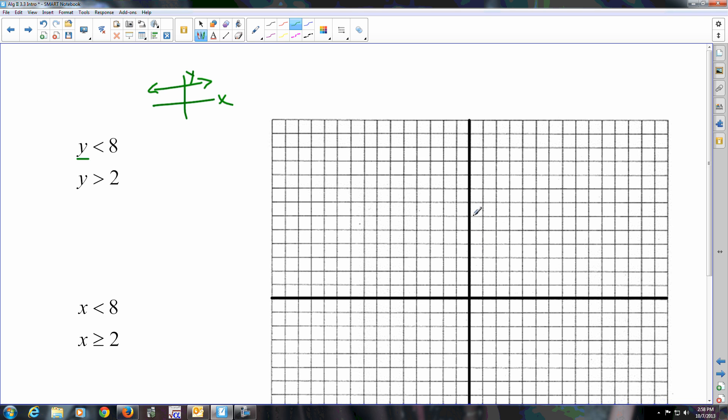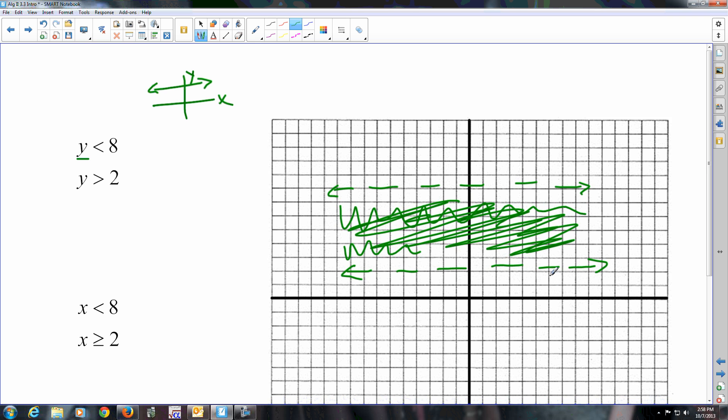1, 2, 3, 4, 5, 6, 7, 8. It doesn't have an equal sign with it, so it's dashed. Y is less than, so I'm shading under it. This line is another horizontal line that's dashed. Y is greater than, so I'm shading above it. So the area that's in common is the area that's between the two lines.